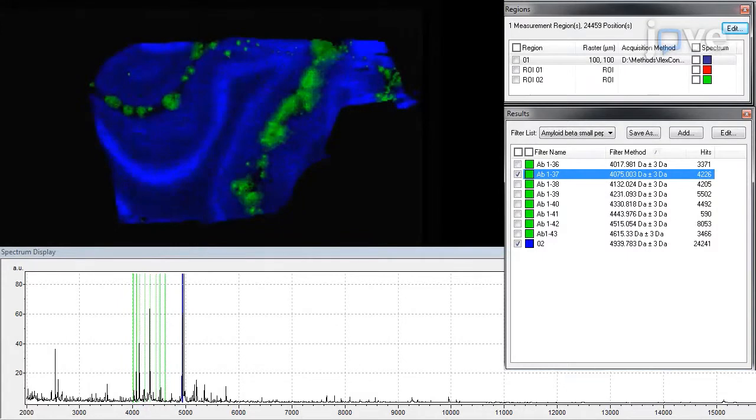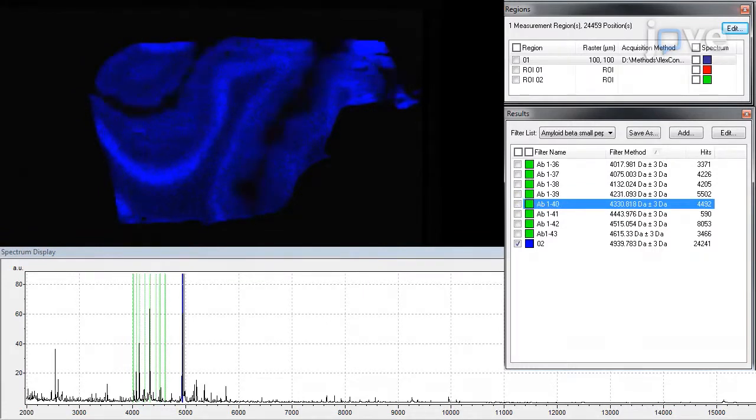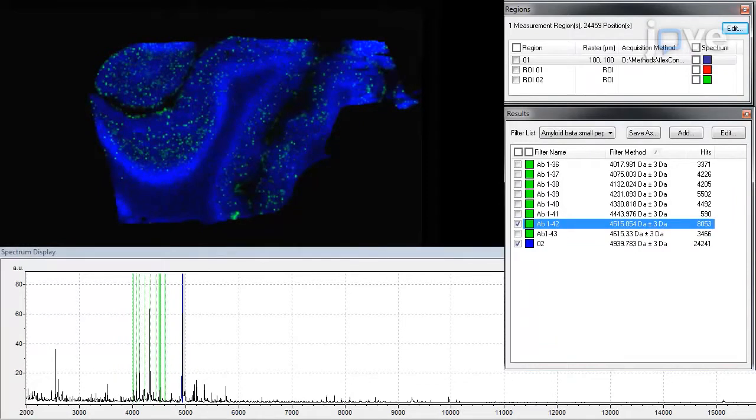Using molecular histology software, overlay multiple signal images to find the spatial correlation of various signals, such as different amyloid beta peptides co-localizing in senile plaques and arterial walls.